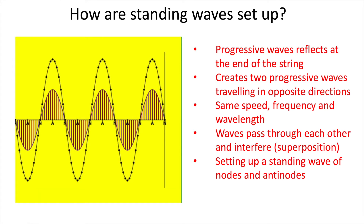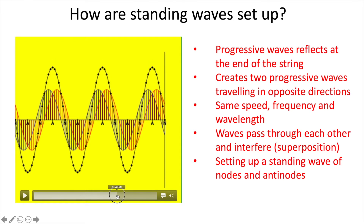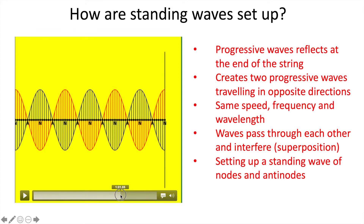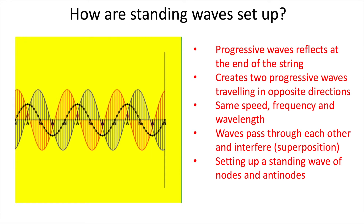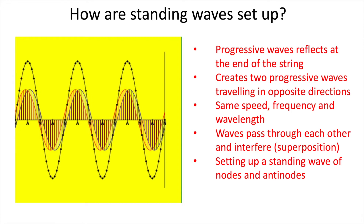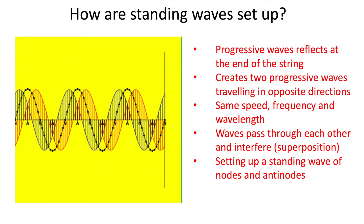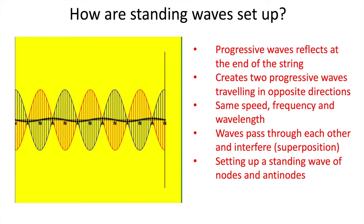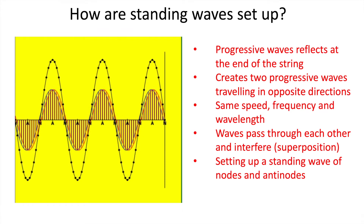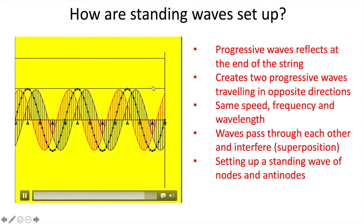Moving through one cycle slowly, the progressive waves pass through each other and the amplitude of the standing wave drops. When the progressive waves are exactly 180 degrees out of phase, we get total destructive interference. Continuing through half a cycle, they're back in phase and we get total constructive interference. After a full cycle we're back to where we started. The amplitude of the standing wave is double the amplitude of the progressive waves.